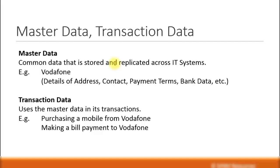Let me give you an example. You have a vendor where you buy your phones, make your mobile plans, and pay your bills. For example, that vendor is Vodafone. So you create the master data for Vodafone — you give the Vodafone company details: the address, the contact, the email, telephone numbers, the payment terms (meaning within how many days you need to make payment from the invoice), and the bank details or credit card details. All these details you can key in to the master data.